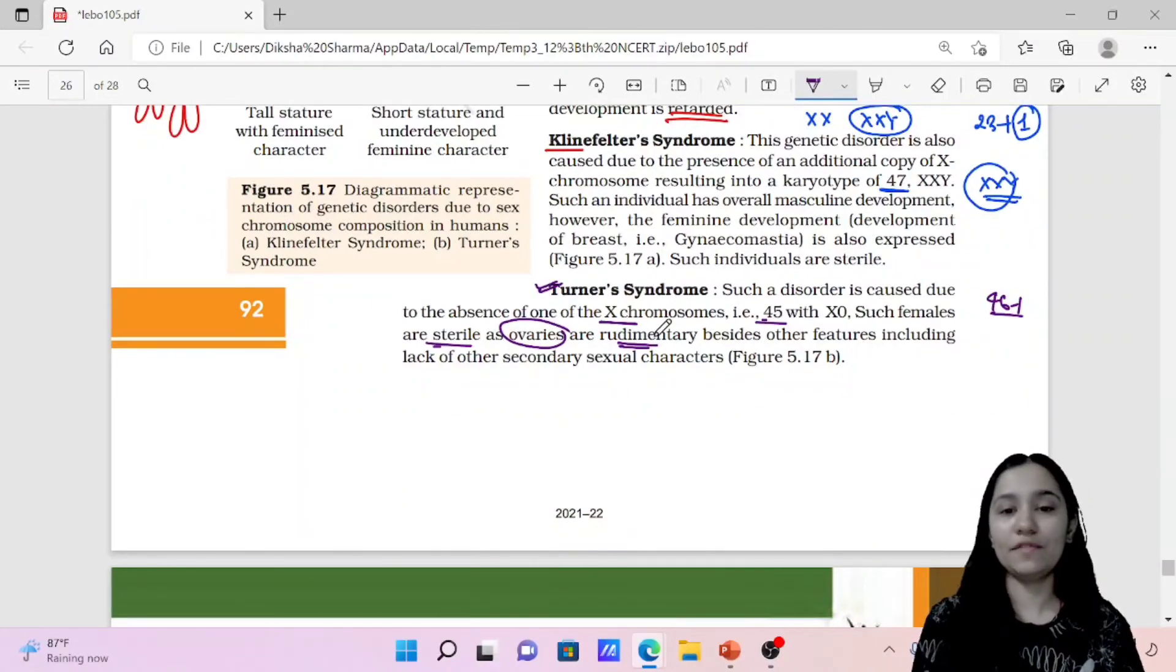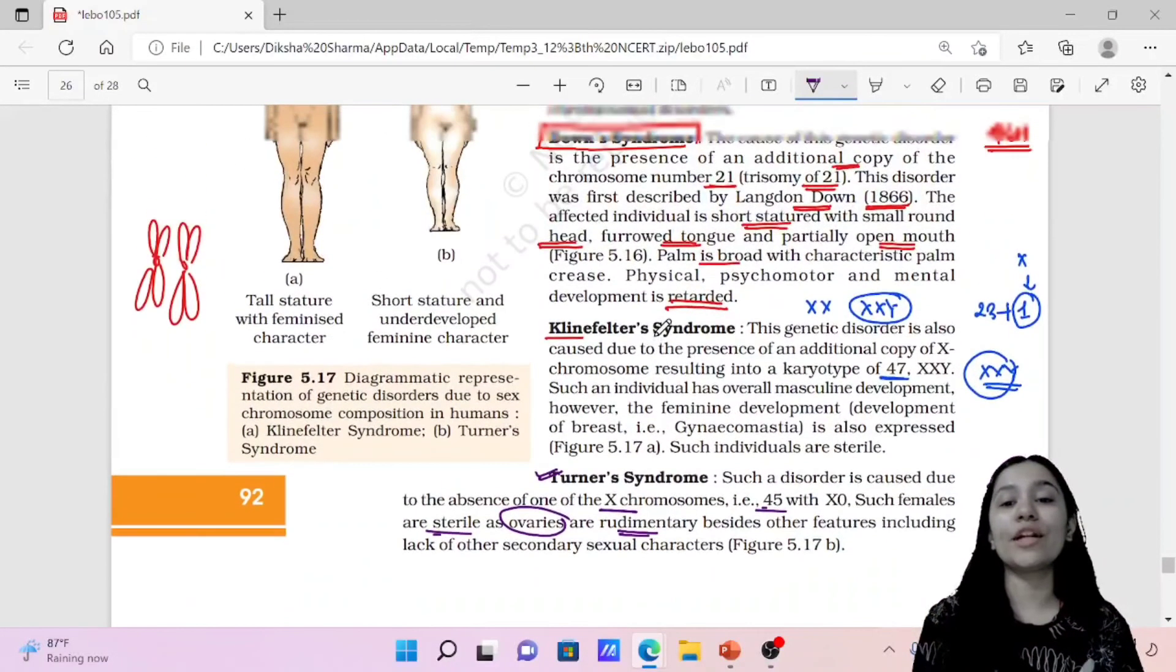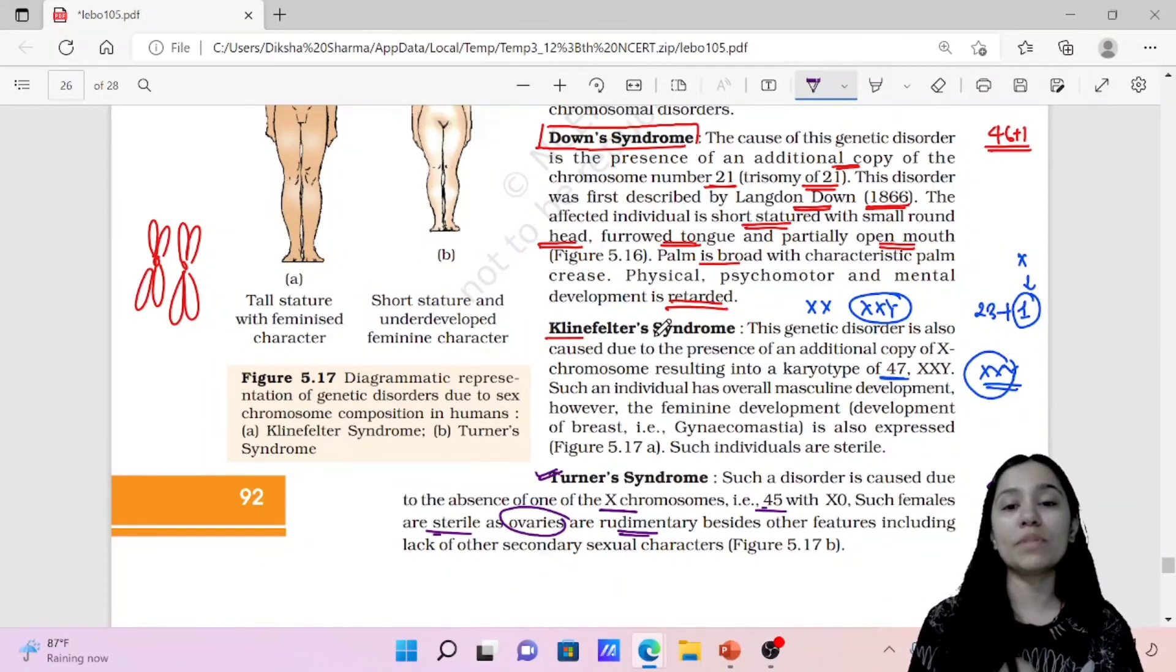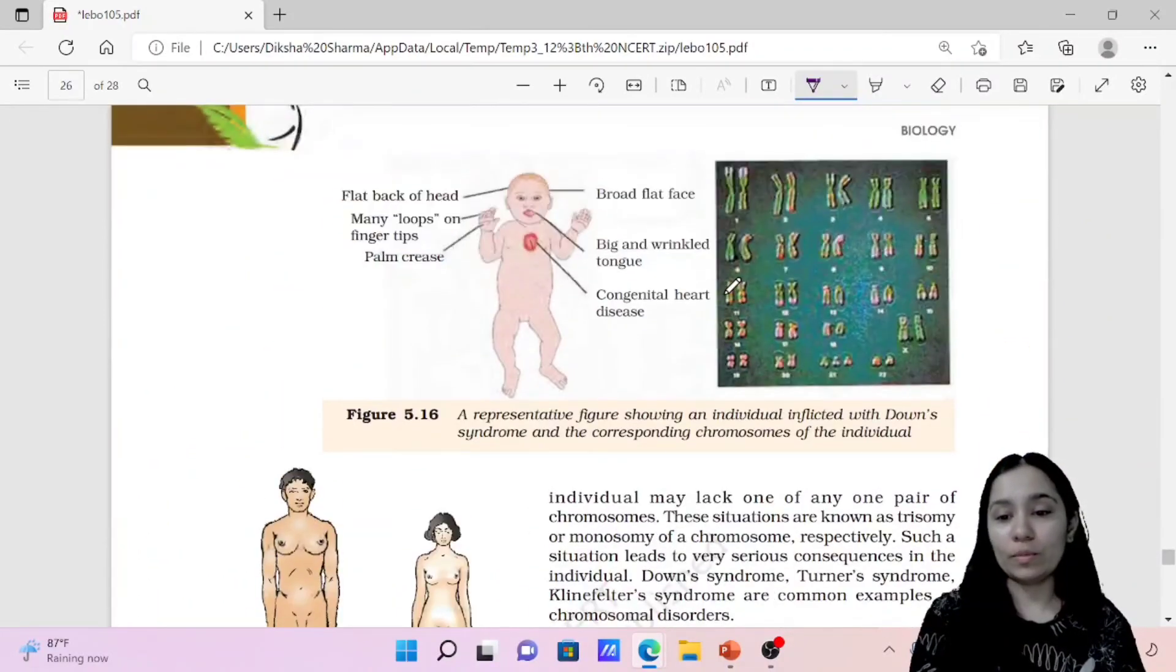These are the three important syndromes which are related with chromosomes. First is Down syndrome, Klinefelter syndrome, and Turner syndrome. Turner syndrome in females, one X chromosome is missing, that is aneuploidy, 45 chromosomes. Down syndrome is trisomy 21, three chromosomes at chromosome 21. Klinefelter syndrome, in sex chromosome, an additional X chromosome is added.